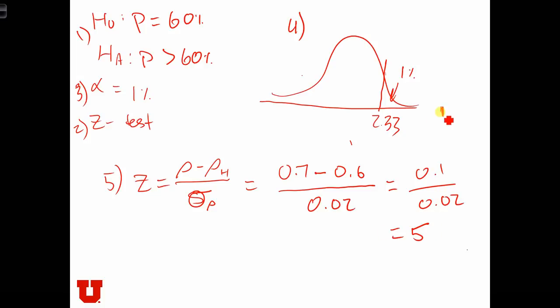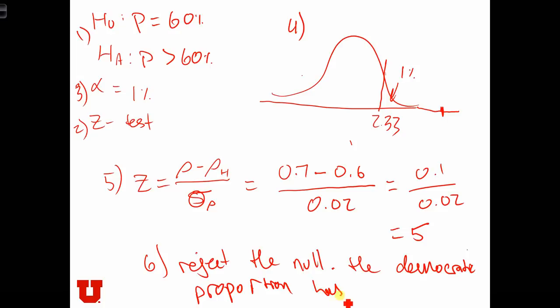So if we plotted a five, it would be way out here in the tail in the zone of rejection. So in step six, we reject the null, the Democratic proportion has increased.